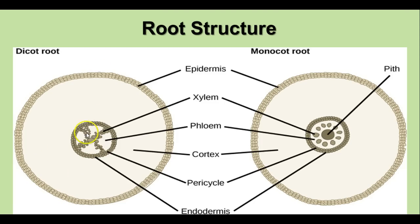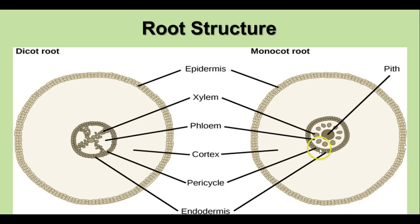A dicot root has the xylem cells making an X shape in the center, with the phloem in between the arms of the X. In the monocot root, you'll have the xylem tissues surrounding the pith in the center, with phloem tissue in the middle.